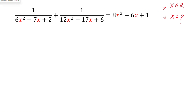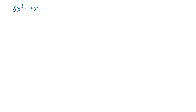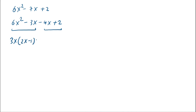Look carefully at this algebraic equation. First, we will factorize each quadratic. For 6x² - 7x + 2, we apply the middle term split: 6x² - 3x - 4x + 2. Taking 3x common gives (2x - 1), and taking -2 common also gives (2x - 1). So the factors of 6x² - 7x + 2 are (2x - 1)(3x - 2).